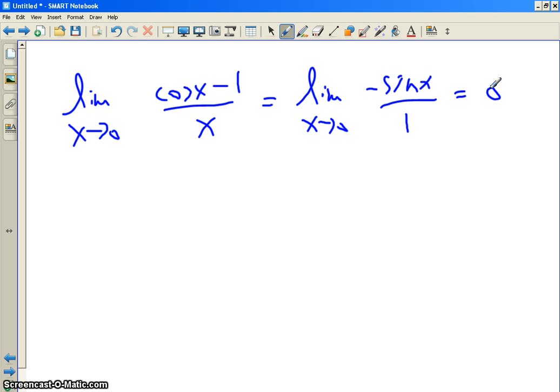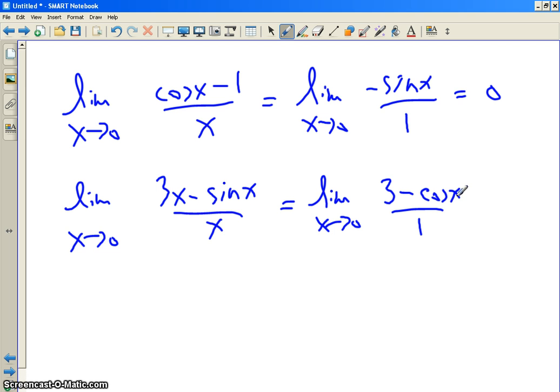So, now we can handle some crazy limits. Let's see. How about this one? What's the limit? Any questions? Am I going too fast for anybody? Let me know. Slow me down by asking questions. Limit as x approaches 0 of 3x minus sine x over x. What form is this if we plug in 0? 0 over 0. So, what do you do? The derivative of the top is what? 3 minus cosine. Over 1. And the cosine is 0? So, you get 2.